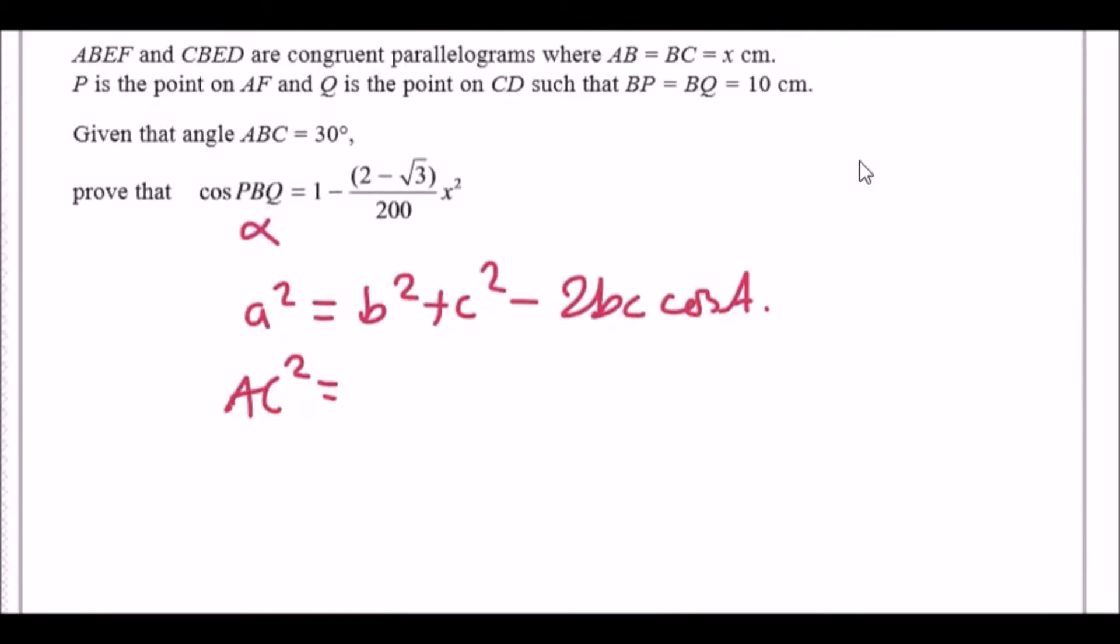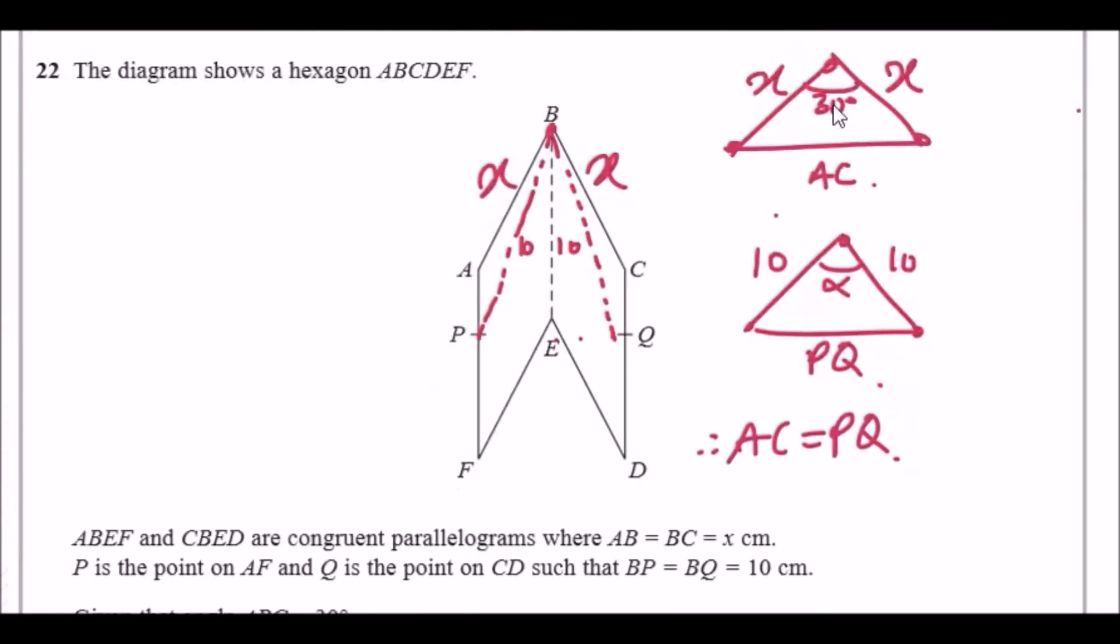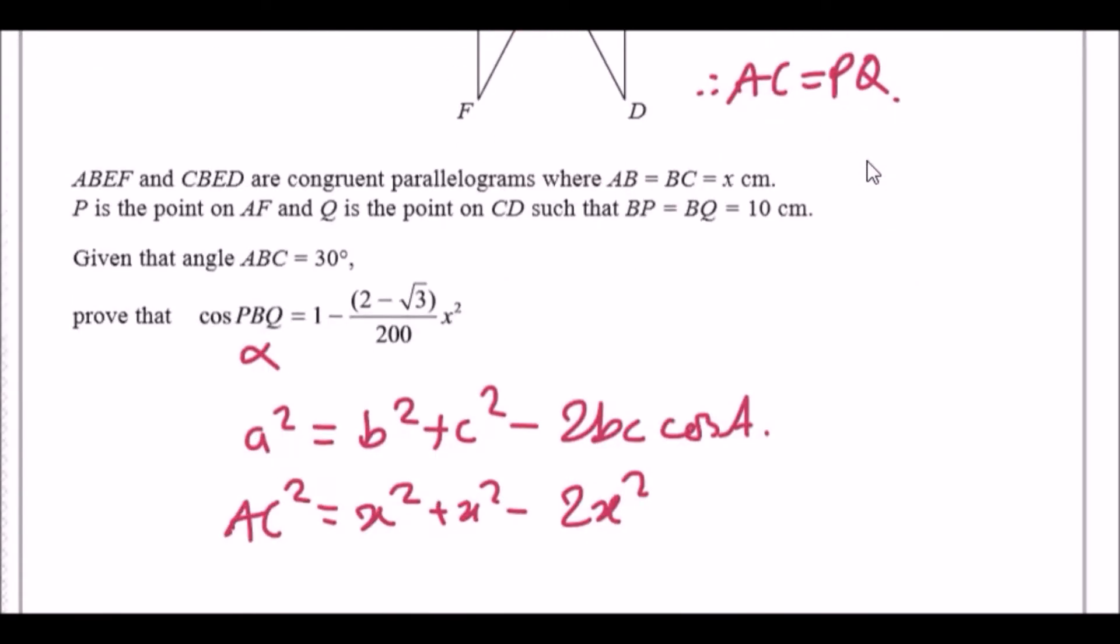The little b and little c's are the x's, so x² plus x² minus two times x times x, which is 2x² cos 30.